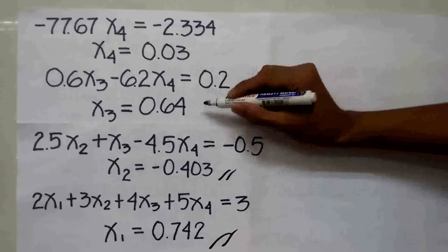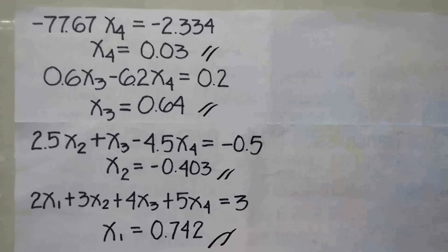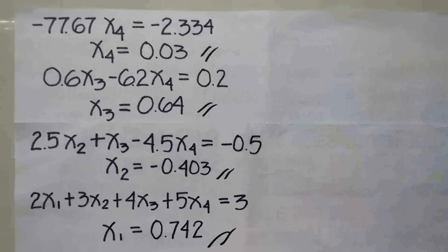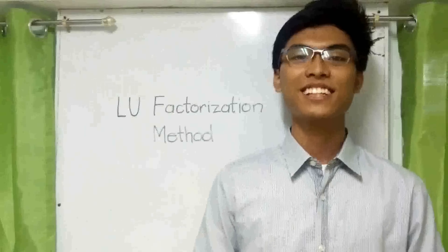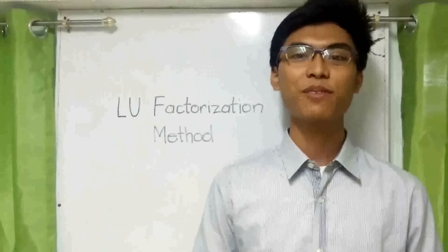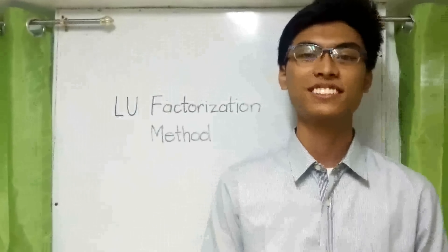These are the values for your unknown variable X. That's it. You now have the values of the unknown variables. Thanks for watching.